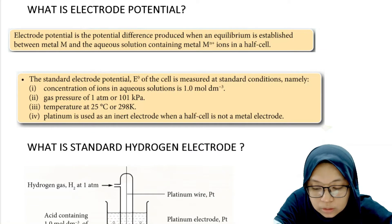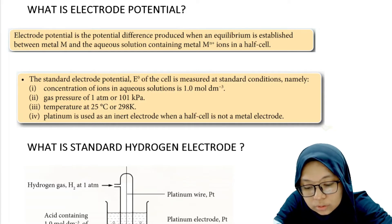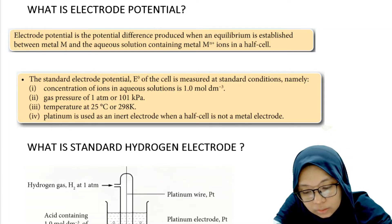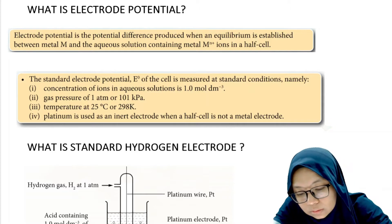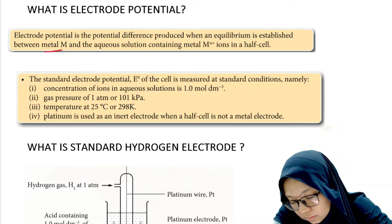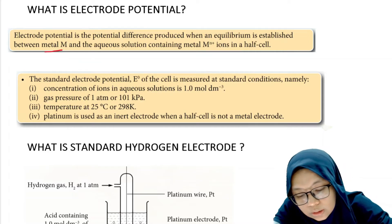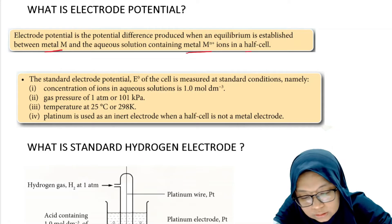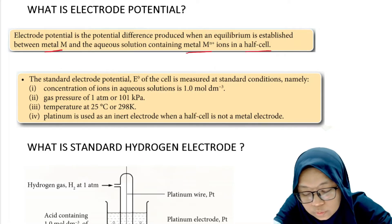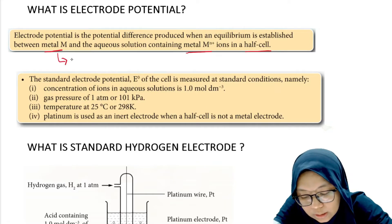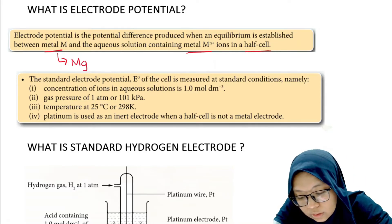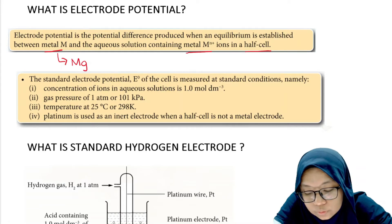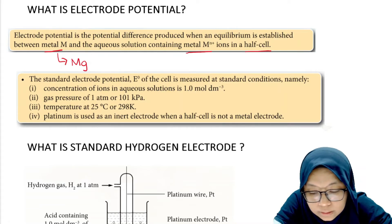Before we talk about the standard hydrogen electrode, I would like to explain what is electrode potential. Electrode potential is a potential difference produced when an equilibrium is established between metal M and the aqueous solution containing metal M^(n+) ion in a half cell. There are some terms you have to know. The first one is metal M — metal M is any metal that you choose to determine the electrode potential value.